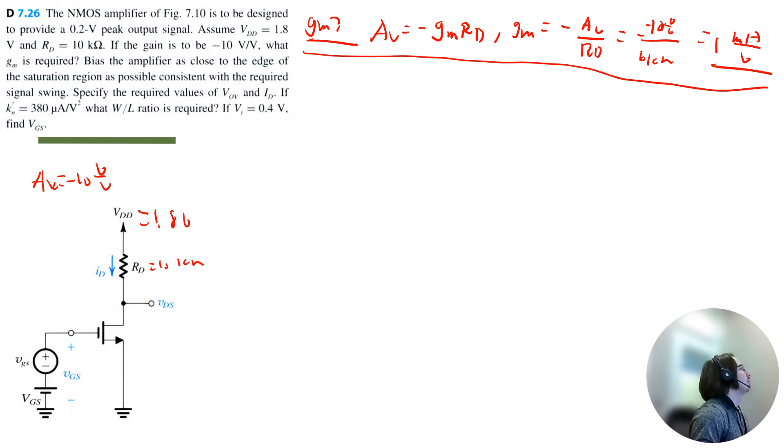Bias the amplifier as close to the edge of the saturation region as possible consistent with the required signal swing. So the signal swing says we have a maximum gain of 0.2 volt peak signal. Therefore the voltage from drain to source needs to be equal to the overdrive plus this maximum output signal swing, which is 0.2 volt. So that means the minimum signal at the drain is going to be equal to the overdrive voltage.